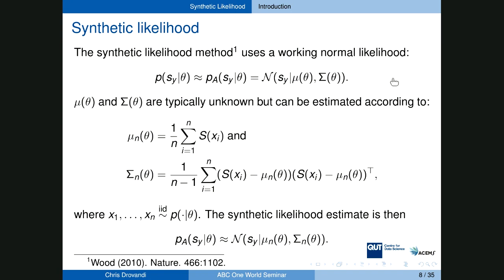For complex models we don't know the relationship between mean, covariance, and the parameter, but we can estimate them by simulation. We propose a parameter value theta in an MCMC algorithm, generate N i.i.d. simulations from the statistical model, compute summary statistics for each, then compute the sample mean and sample covariance matrix of those summary statistics. We plug these into the multivariate normal density and evaluate at the observed summary statistic — this becomes our approximation to the likelihood, fed into MCMC.